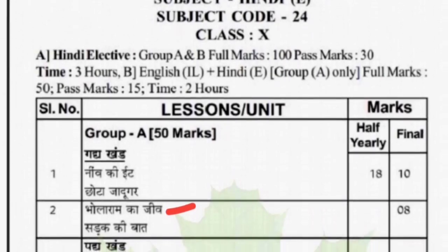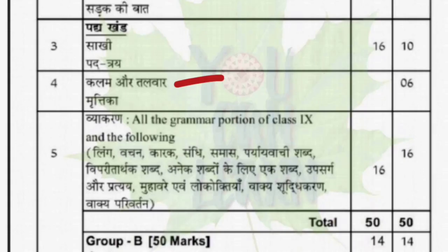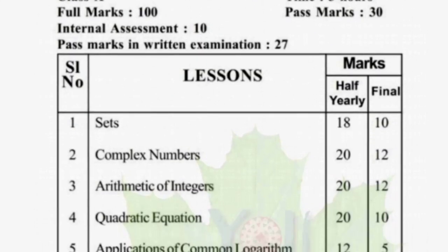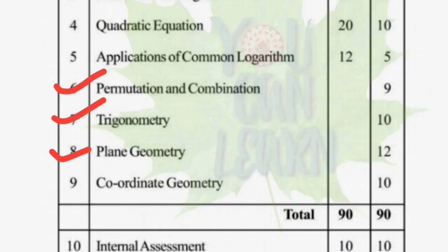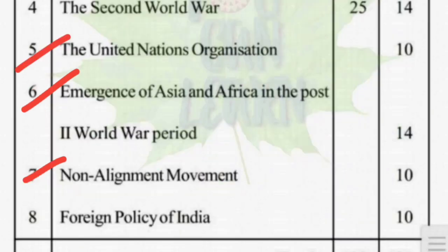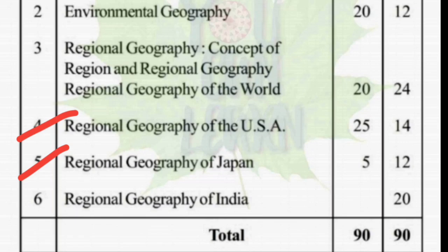The 4th lesson covers Permutation and Combination, Trigonometry, and Plain Geometry. The topics also include the United Nations Organization, the Emergence of Asia and Africa in the post-World War II period, the Non-Alignment Movement, and the Regional Geography of the USA and Japan.